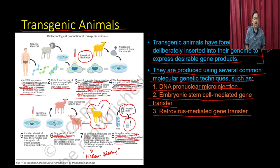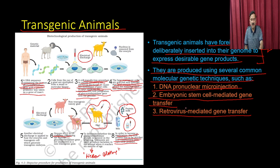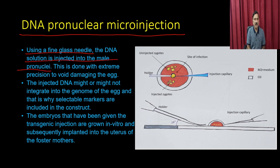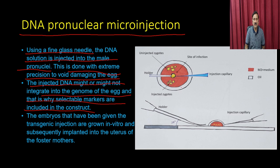This is a general protocol for producing a transgenic animal and illustrating its advantage. The first technique is DNA pronuclear microinjection. Using a fine glass needle, the DNA solution is injected into the male pronuclei with extreme precision to avoid damaging the egg. The injected DNA may or may not integrate into the genome, which is why selectable markers are included in the construct. Embryos given transgenic injections are grown in vitro and subsequently implanted into the uterus of a foster mother.